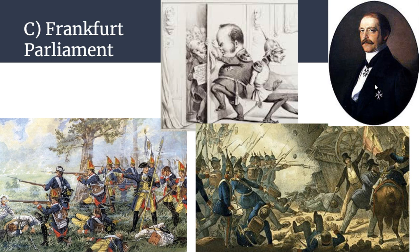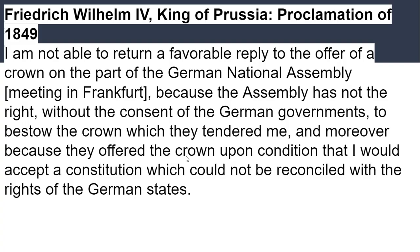Friedrich Wilhelm turned down the crown from 'the gutter,' as he called it, because the Frankfurt Parliament wanted to limit his power in a constitutional way. The revolutions of 1848 were all about trying to push liberal and radical political ideas against the conservative establishment. The Frankfurt Parliament was destroyed, their leaders were killed or arrested, and there was no unification of Germany — because even though Prussia and Friedrich Wilhelm could have unified Germany at this time, it would have led to a decreasing of his political power.